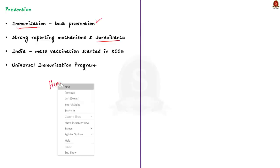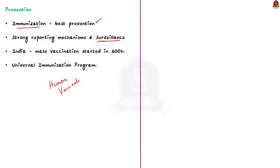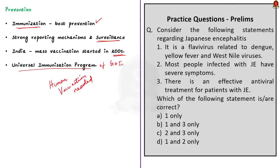The key facts to remember for examination: Japanese encephalitis is a viral disease; symptoms include fever, disorientation, and coma; there is no antiviral treatment, only supportive care; vaccines are available and are included in India's Universal Immunization Program. These points cover what you need to know about transmission, treatment, prevention, and vaccination.